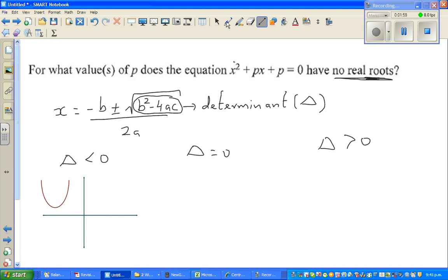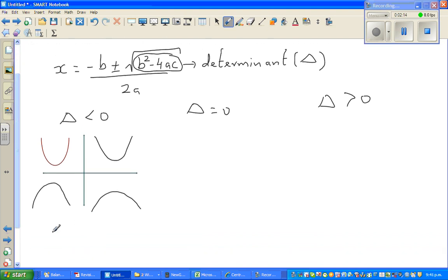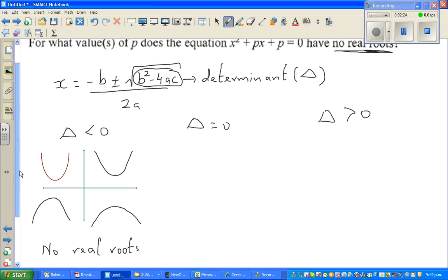It can be a parabola like this or like this, in such a way that it doesn't intersect the x-axis. So when delta is less than 0, there are no real roots. There are roots in complex numbers, but in real numbers, there are no roots.